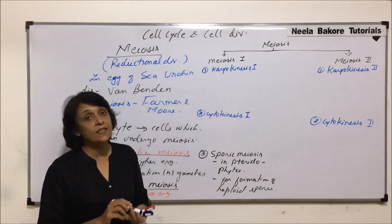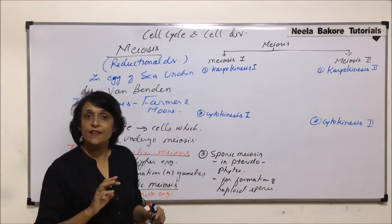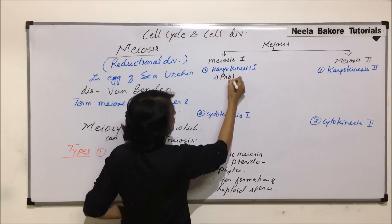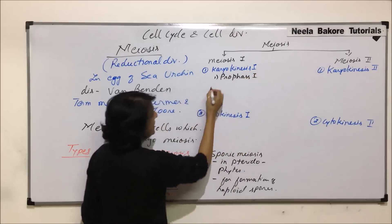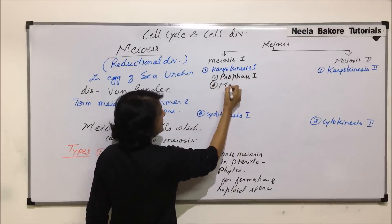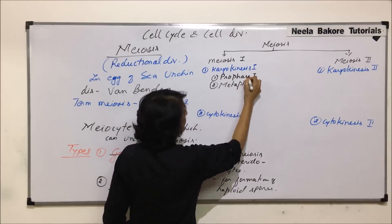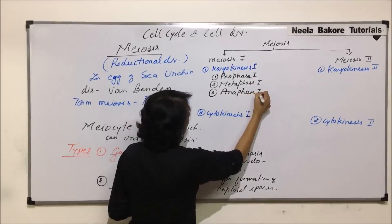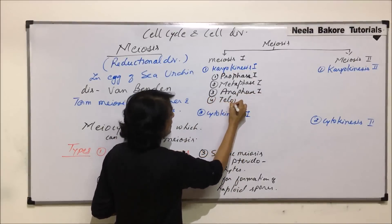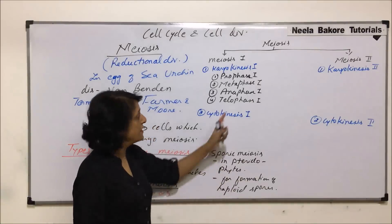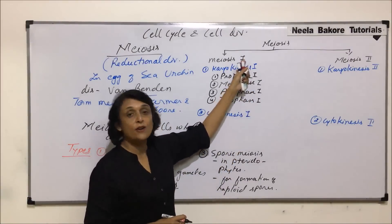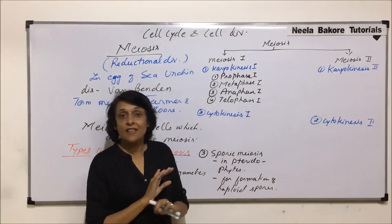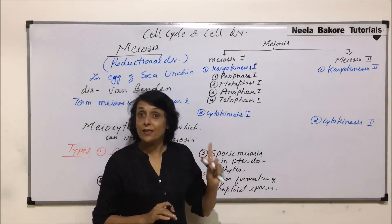Karyokinesis is completed in the same four phases: prophase, metaphase, anaphase, and telophase, but we put the number in front. So in meiosis I we have prophase I, metaphase I, anaphase I, and telophase I, followed by cytokinesis I. Similarly, in karyokinesis II we have prophase II, metaphase II, anaphase II, and telophase II, followed by cytokinesis II.